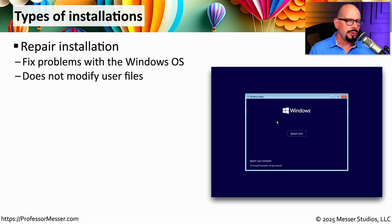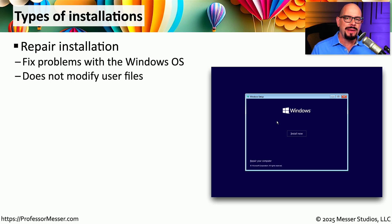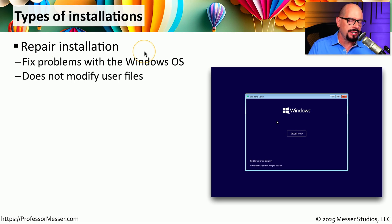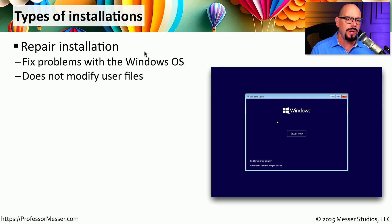Windows also has a way to reinstall the operating system by simply copying over everything that's already there, but leaving the base configuration in place. This is referred to as a repair installation, and it's commonly done to fix any major problems with the operating system that can't be solved any other way.